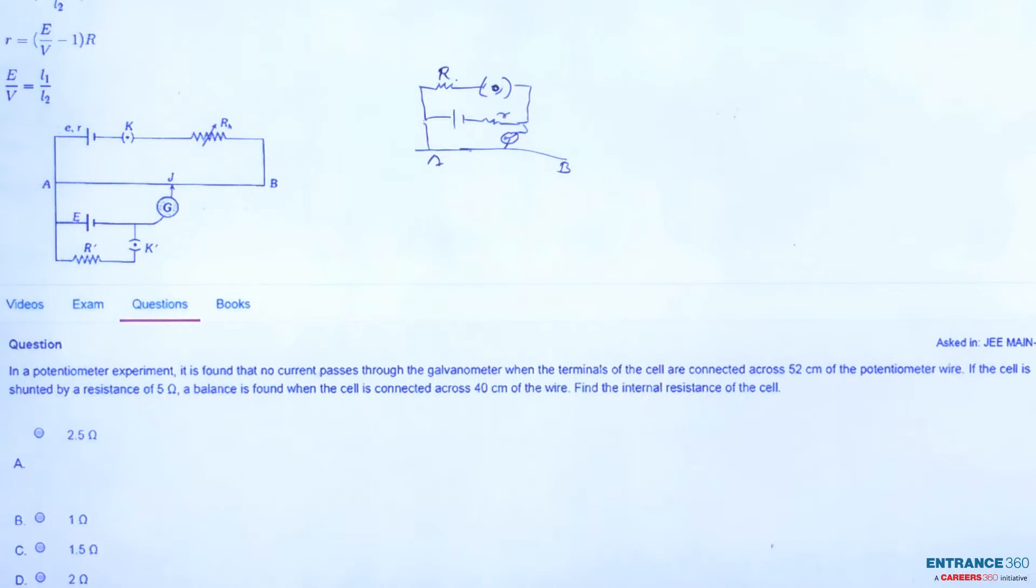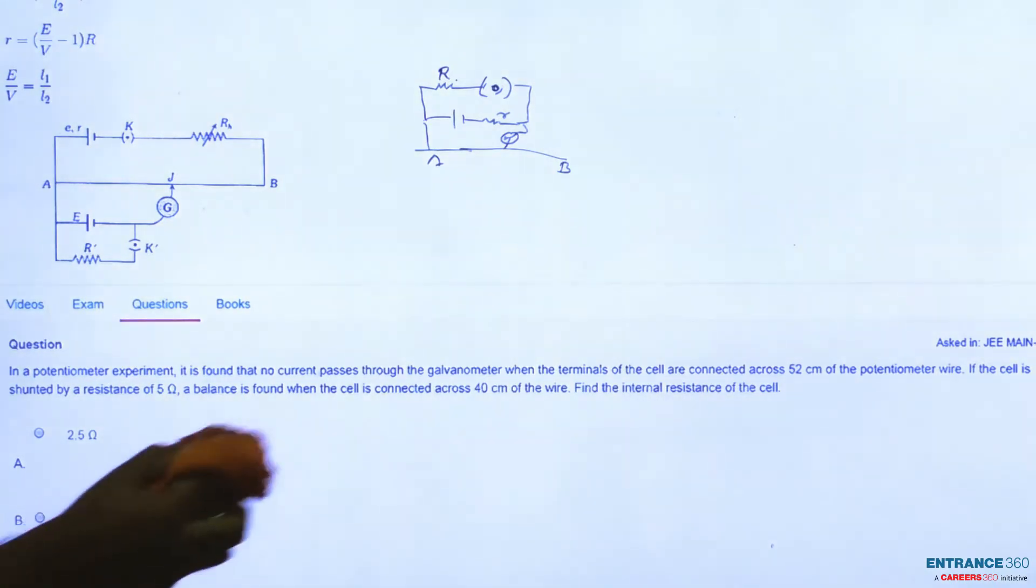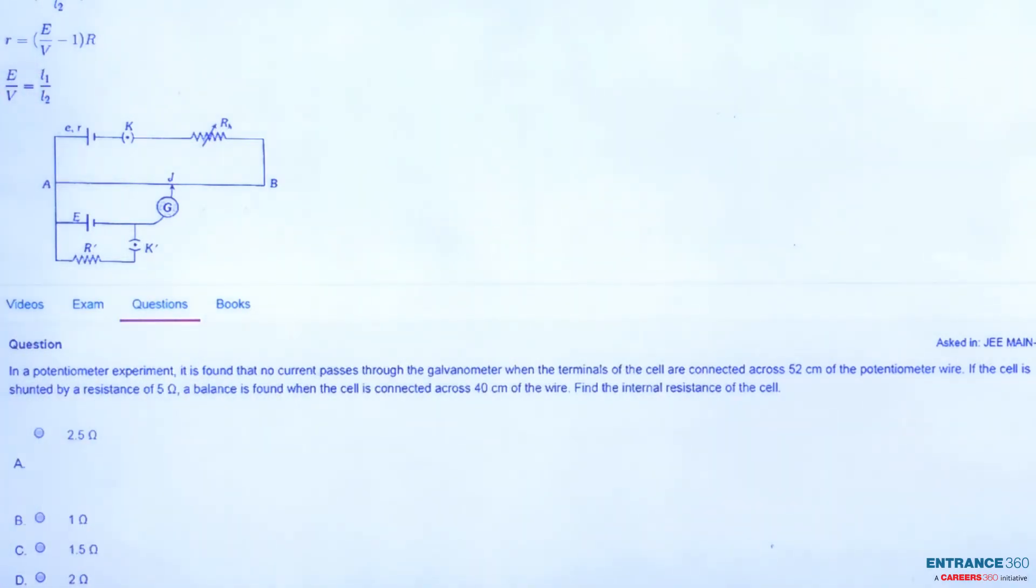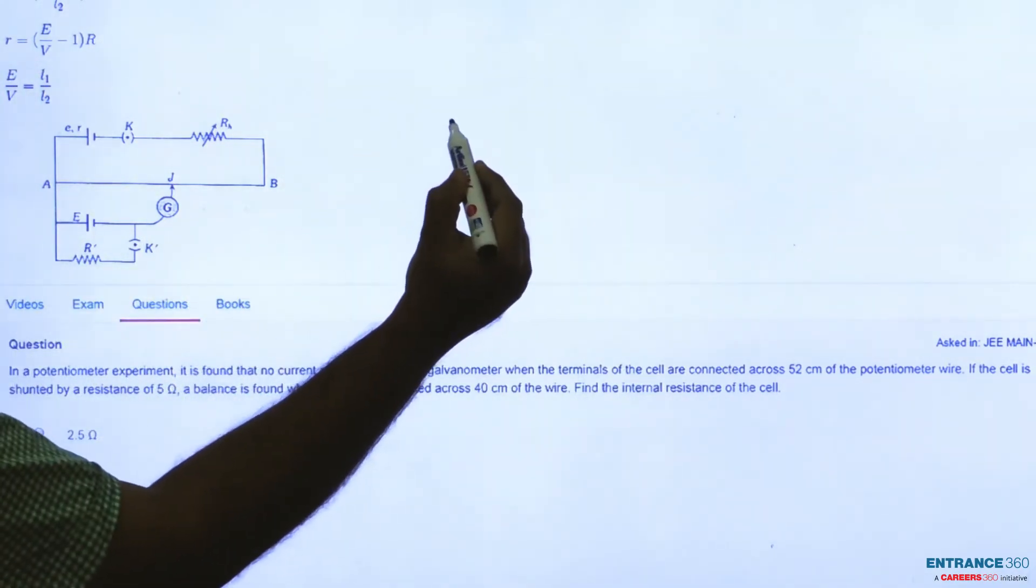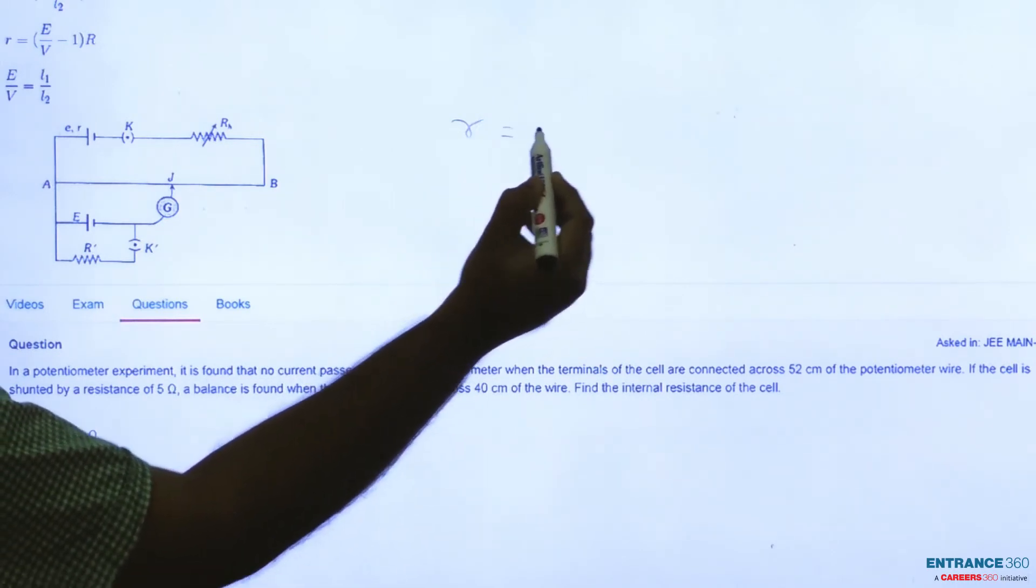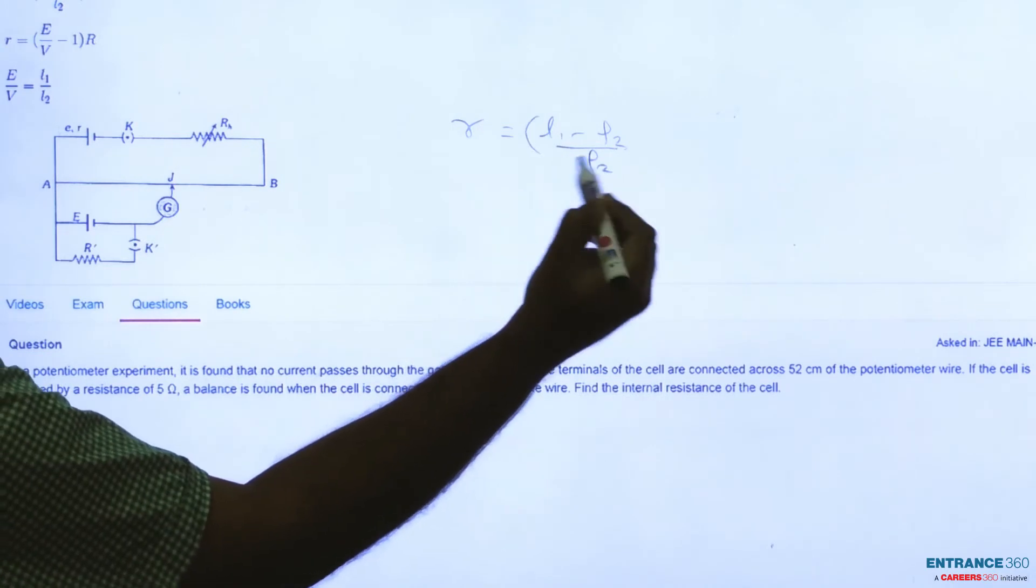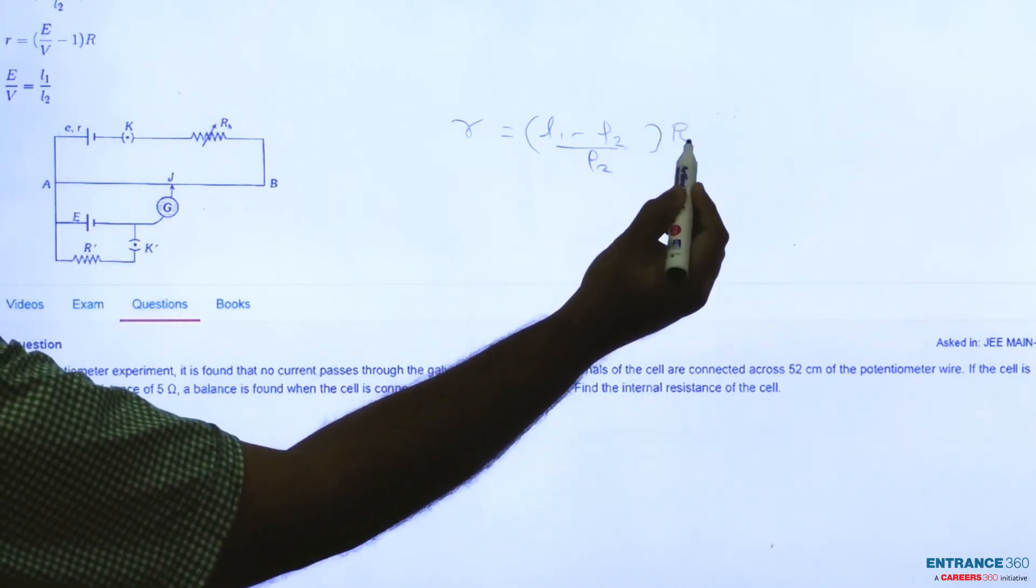So this is the setup and question clearly states this setup. We have a derived formula for finding the internal resistance r for the setup as L1 minus L2 by L2 into external shunt resistance R.